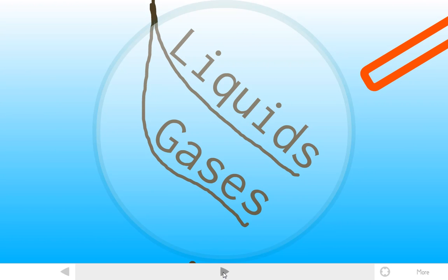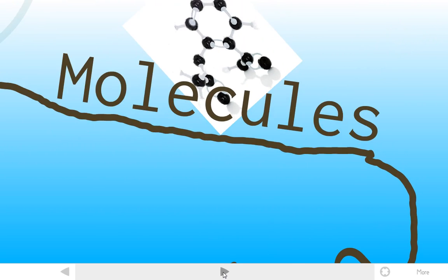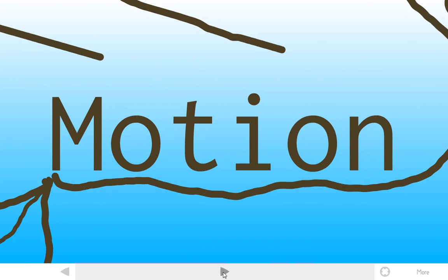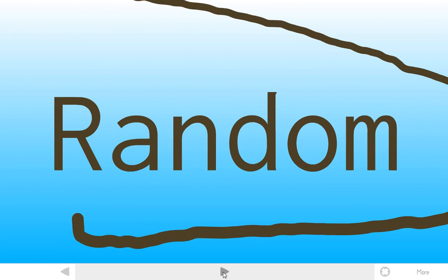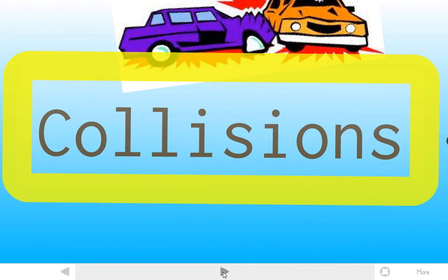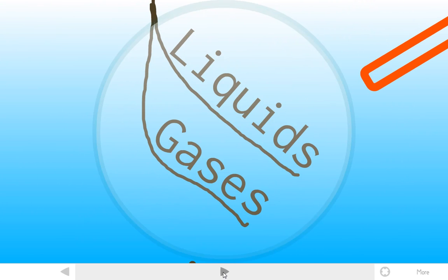Conduction also happens in liquids and gases, but it happens because of the motion, the movement of the molecules. This motion is random and therefore the collisions cause the diffusion of the molecules. That's how conduction in liquids and gases happens.